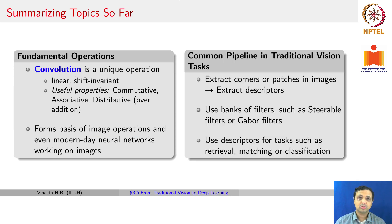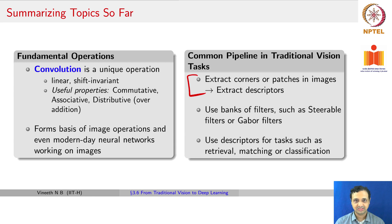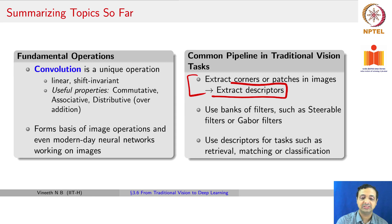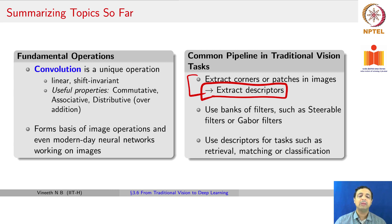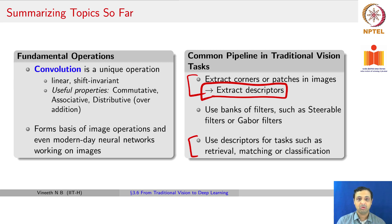We have also seen that the common pipeline in traditional vision tasks typically involves extracting key points or interest points in images — these could be edges or key points with significant change in more than one direction — and then extracting descriptors from these key points. We also saw the idea of using banks of filters such as steerable filters or Gabor filters to get multiple responses from a single image and concatenate them for further processing. These descriptors are useful for tasks such as retrieval, matching, or classification.